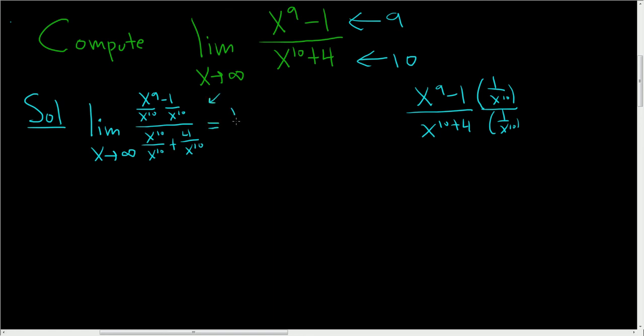All right, let's keep going. This is the limit. As x approaches infinity, here you're going to get 1 over x. And then this will be minus 1 over x to the 10th. In the denominator, you get 1 plus 4 over x to the 10th.